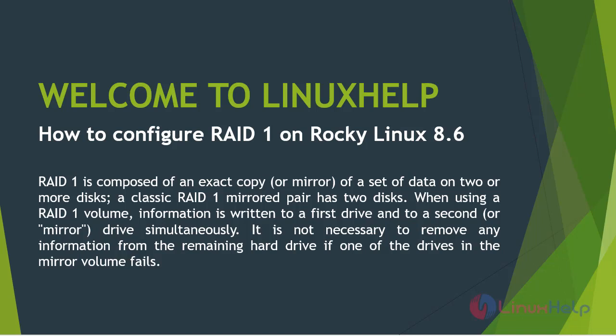RAID 1 is composed of an exact copy or mirror of a set of data on two or more disks. A classic RAID 1 mirror pair has two disks. When you are using a RAID 1 volume, information is written to the first drive and onto a second drive or mirror drive simultaneously. It is not necessary to remove any information from the remaining hard drive if one of the drives in the mirror volume fails.